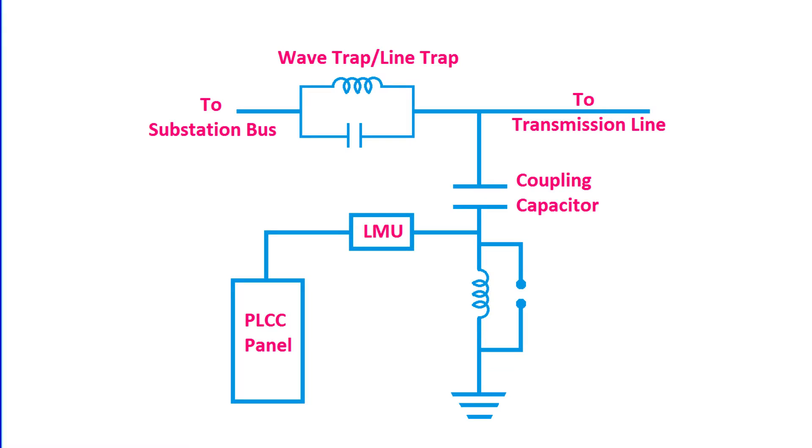The construction of wave trap circuits may seem complex, but it boils down to three key components. First up, we have the main coil or power inductor.